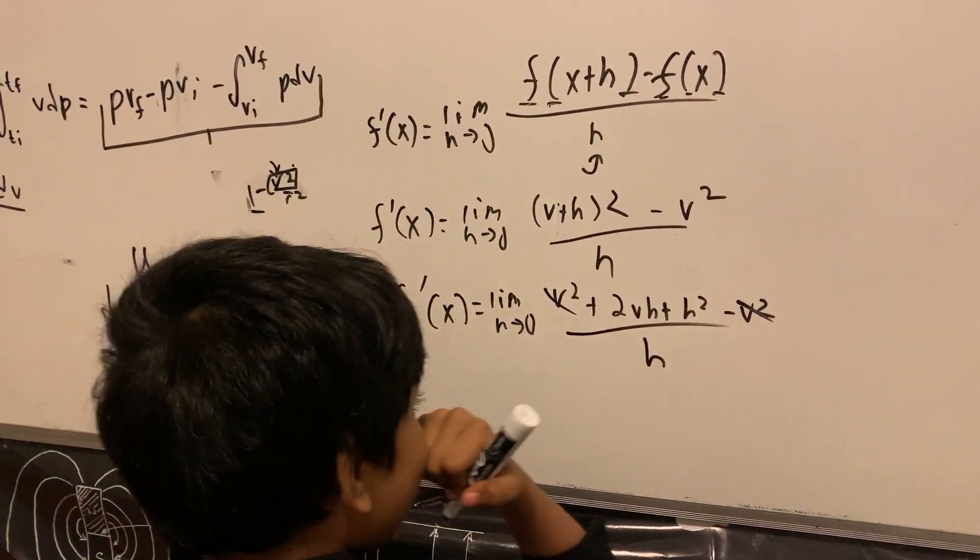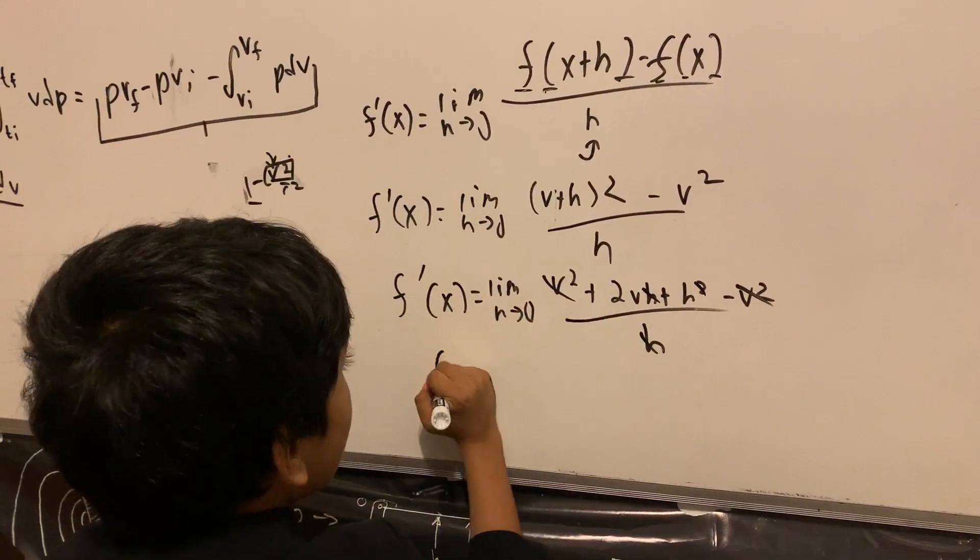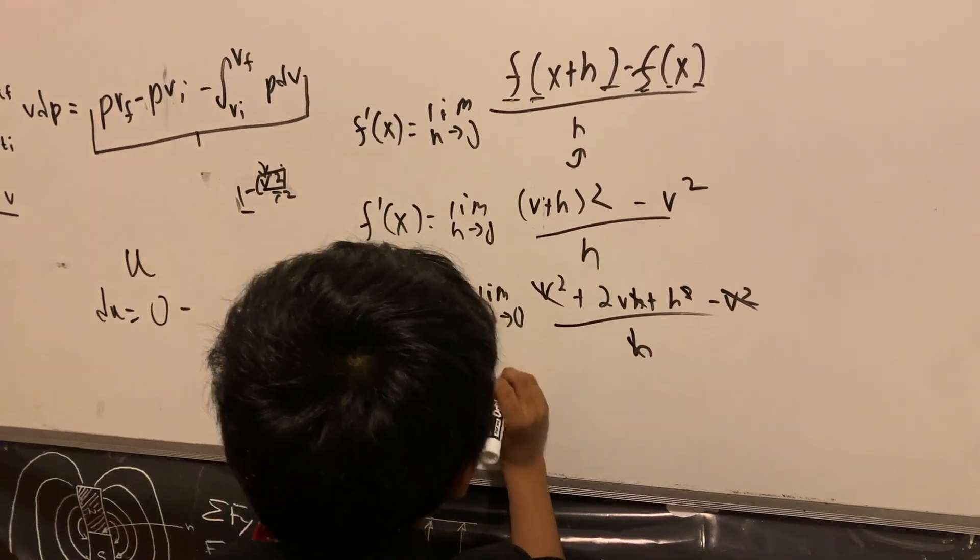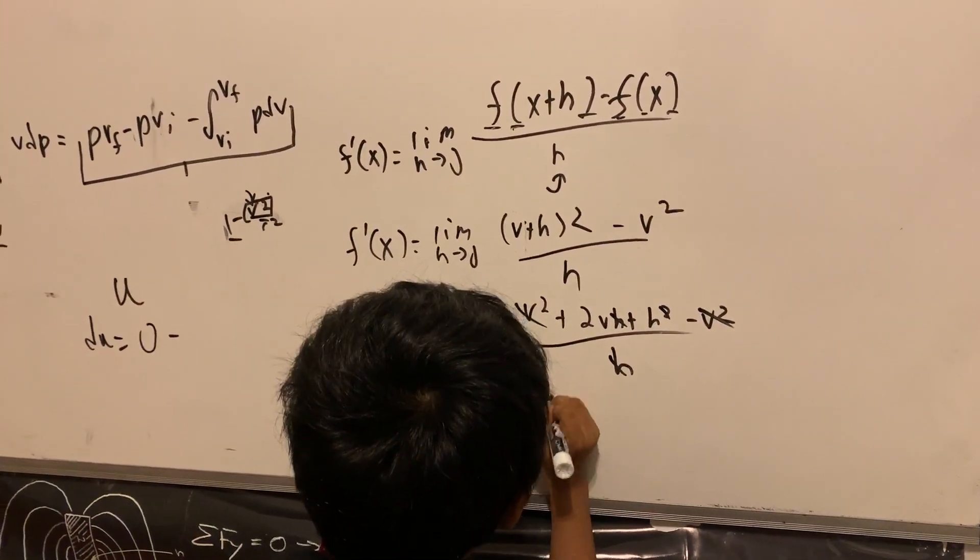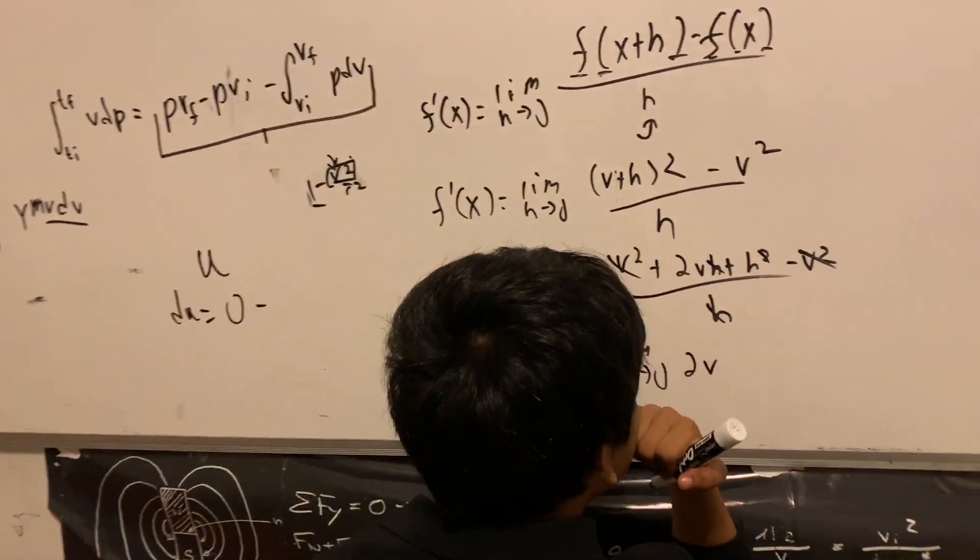Now, we can obviously cancel everything here out, which leaves us with F prime of X equal limit H goes to zero. So, 2V plus H.